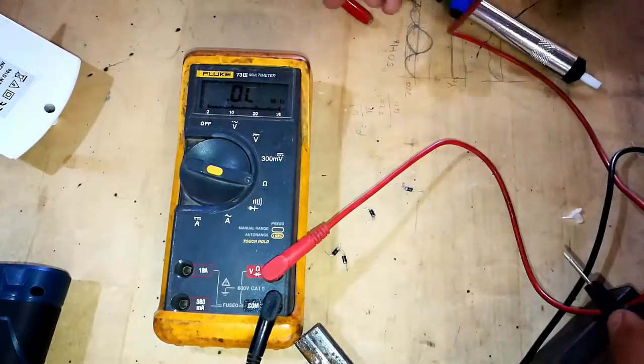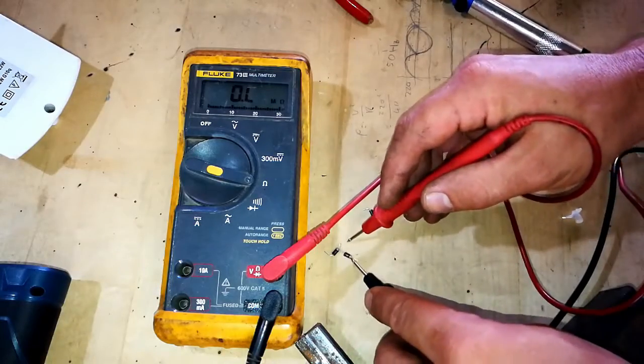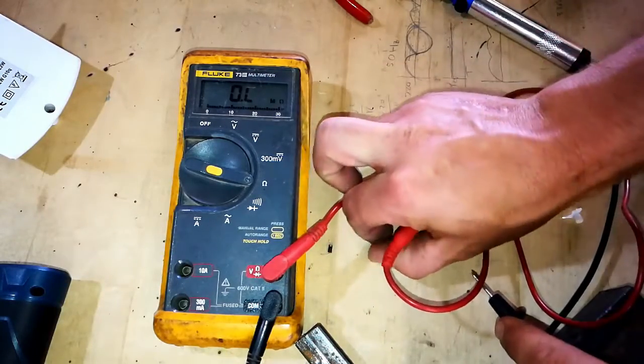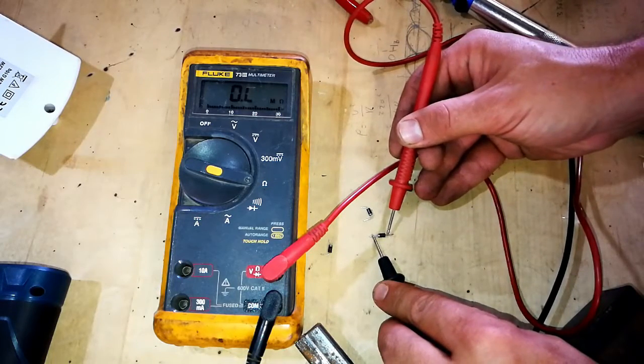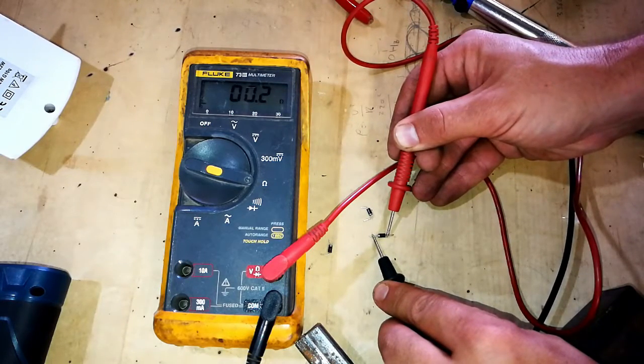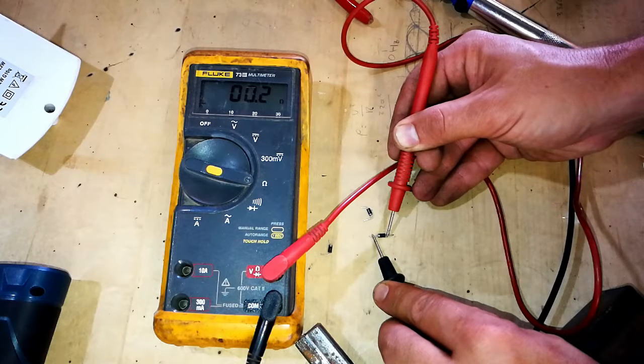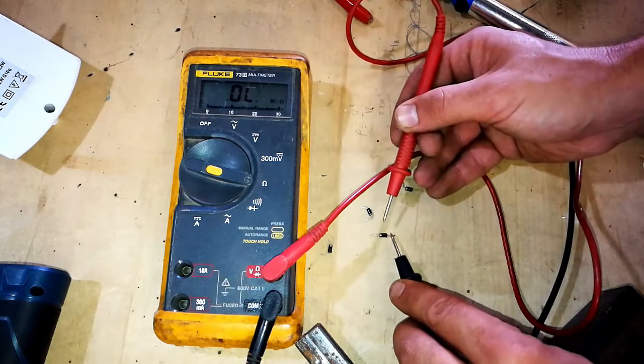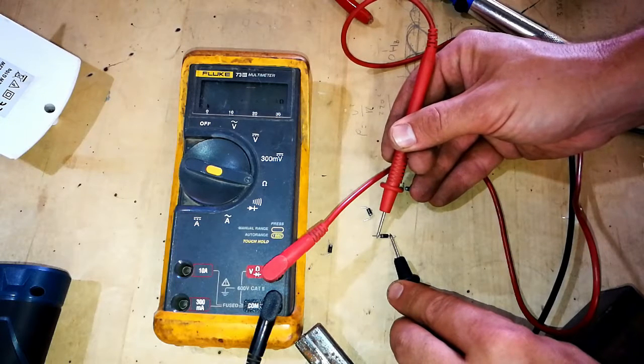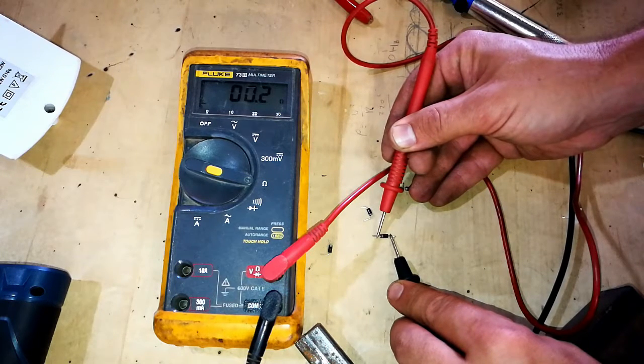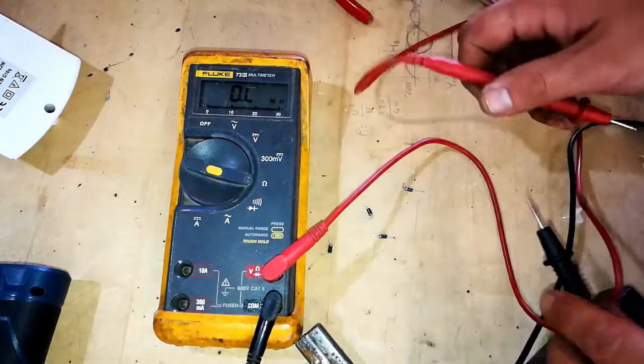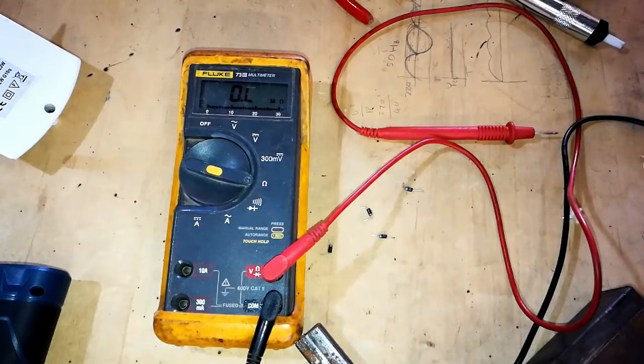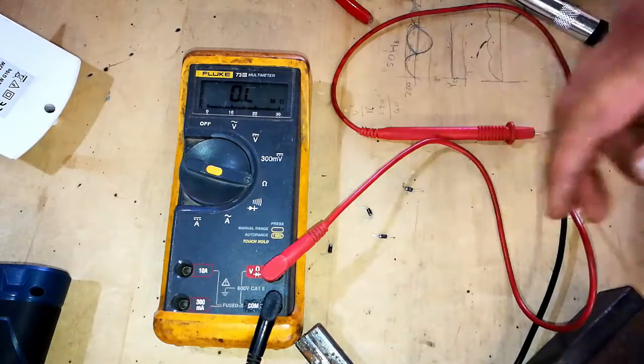If I were to put this on the ohm, what you can check for - put the negative on the negative side and the positive there, you should see a reading of very close to zero ohms on your multimeter. If you turn it around, you should not get that reading. You should get this reading. Zero. Because this doesn't go through at all. So, all four of these diodes are damaged.